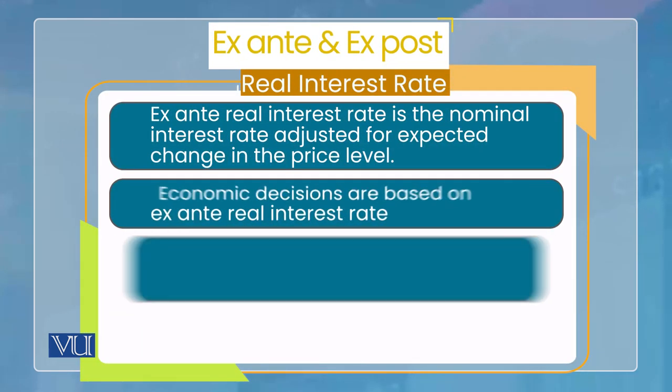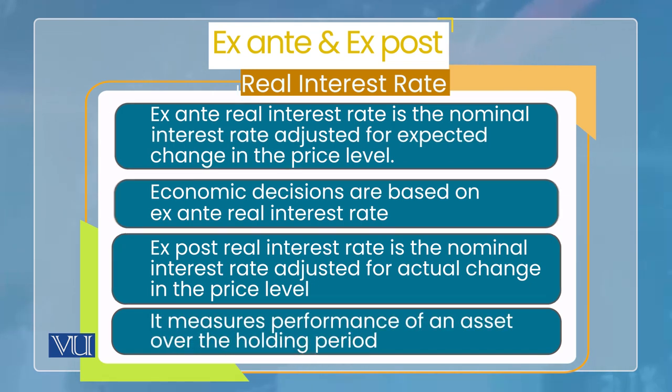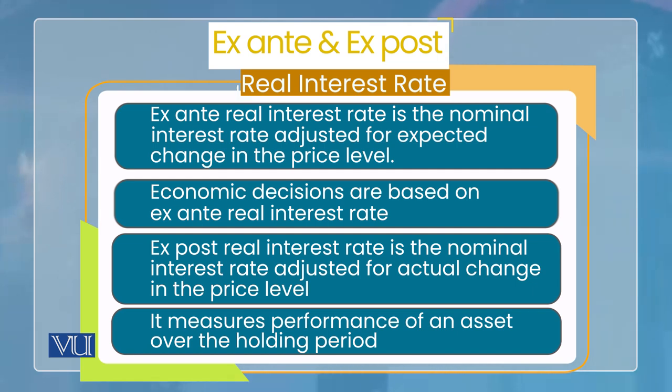Now that it is clear what real cost of borrowing is — it comes after adjusting inflation from the interest rate — remember that real interest rate can be of two types, and on this basis we will derive the formula ahead. One is ex-ante real interest rate and one is ex-post real interest rate. Since we need to adjust inflation from the interest rate, one type of inflation is anticipated — i.e., what will inflation be next year according to my expectation, known as expected inflation rate. If I subtract this expected inflation rate from the nominal interest rate I am receiving, the resulting real interest rate is called ex-ante real interest rate.